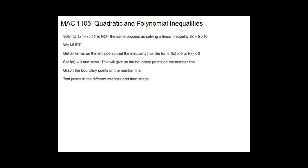Quadratic and polynomial inequalities. Solving 2x squared plus x is greater than 15 is not the same process as solving a linear inequality like 3x plus 5 greater than 10. We must get all terms on the left side of the inequality so that we have the form: our function is greater than 0, or our function is less than 0. So your function needs to be on the left-hand side and the other side you want to be 0. That's our first step.